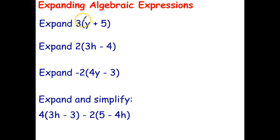Expand 3 times in brackets y plus 5. What I like to do whenever I'm using the distributive law is put these little arcs in, just to remind myself that I'm multiplying the term or expression outside the brackets by each of the terms inside the brackets. That gives me 3 times y, which I write as 3y. Copy the plus sign. And 3 times 5 is 15.